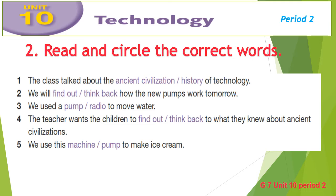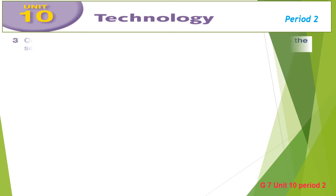Let's do them one by one. 1. The class talked about the history of technology. 2. We will of course find out how the new pumps work tomorrow. 3. We used a pump to move water. 4. The teacher wants the children to think back to what they know about ancient civilizations. 5. And finally, we use this machine to make ice cream.